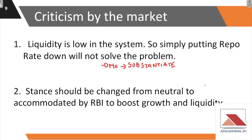This move is also facing criticism from experts. The first criticism is that liquidity is already low in the system, so simply cutting the repo rate will not solve the problem on its own — a single solution is not sufficient. One suggested alternative is open market operations, which in past years have performed well in determining market conditions and keeping a check on inflation.